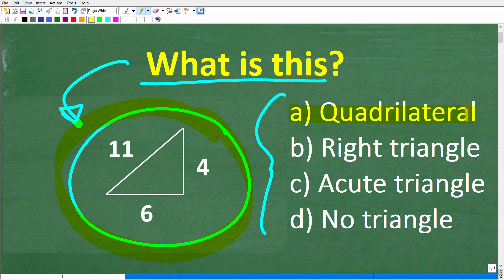All right, so A, this could be a quadrilateral, B, this might be a right triangle, C, it could be an acute triangle, or D, maybe this is not even a triangle.